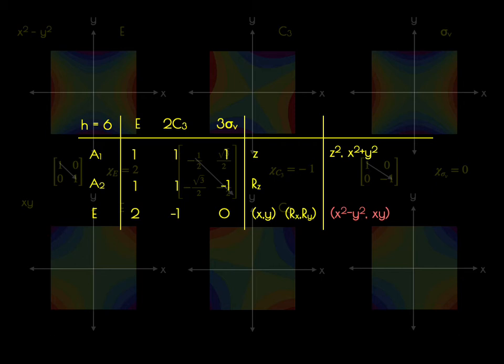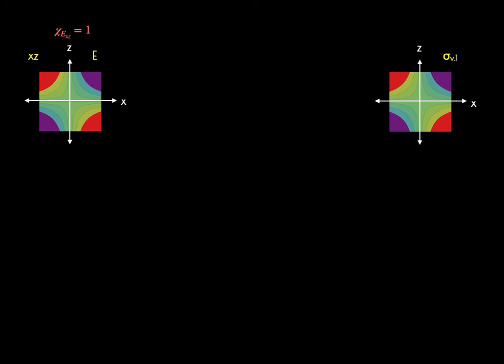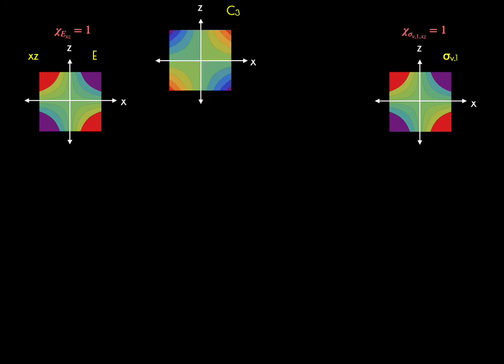We now have four of the six binary products assigned. Moving on, we plot the xz function as a two-dimensional contour plot in the xz plane. Its character for E is 1. Skipping to the mirror plane in the xz plane, the reflection changes nothing, so that character is also 1. As we do the rotation along the C3Z axis, at first it looks like we've simply inverted the function; however, the contour intensities have changed. Therefore, the character for this C3 rotation is not ±1, meaning it's an admixture of another function — by process of elimination, the yz function.